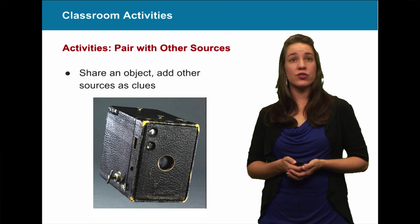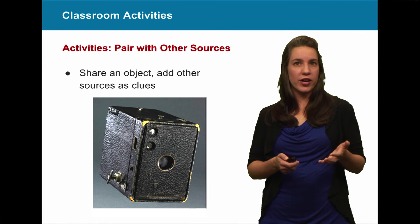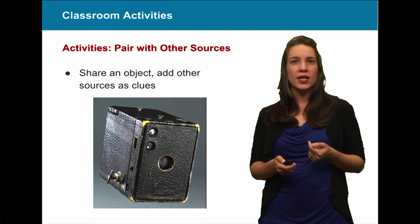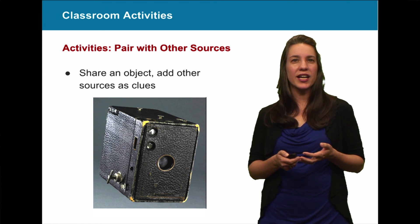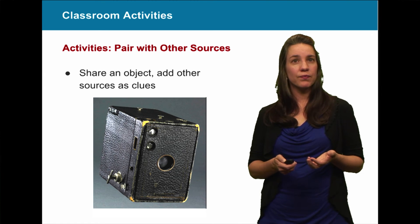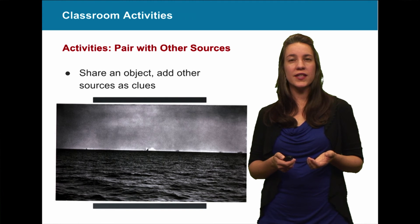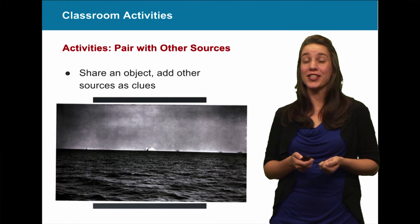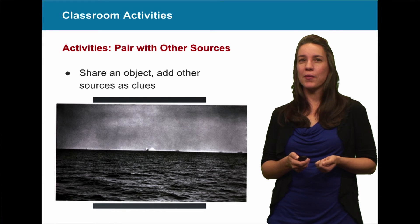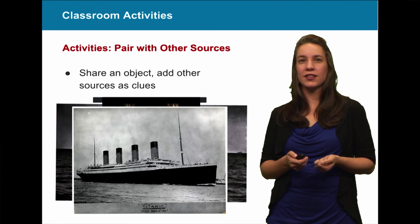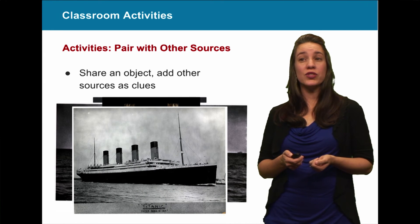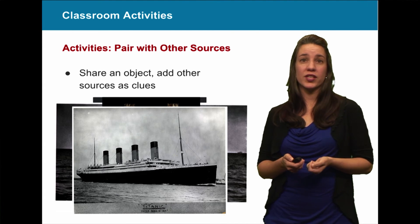Pair objects with other sources. Share an object and then start adding sources as clues. If you look at this object, kids might conclude it looks like a camera — and they'd be right. Then bring in an image of an iceberg far in the distance. Here's another object: a life vest. And then finally — the Titanic. The camera was used by a passenger on the Carpathia to photograph Titanic survivors.